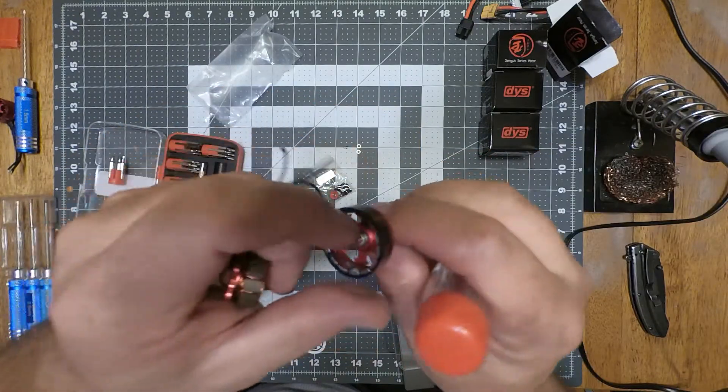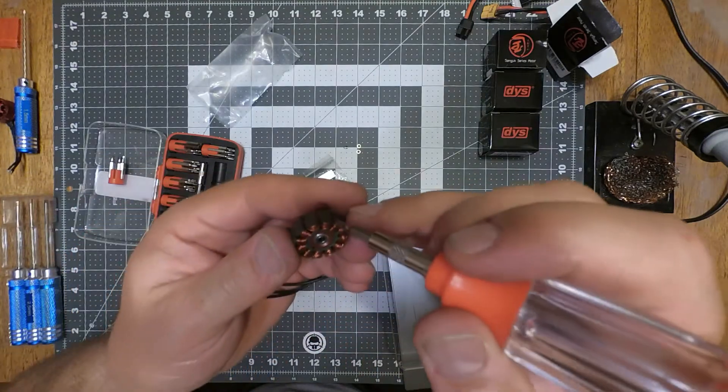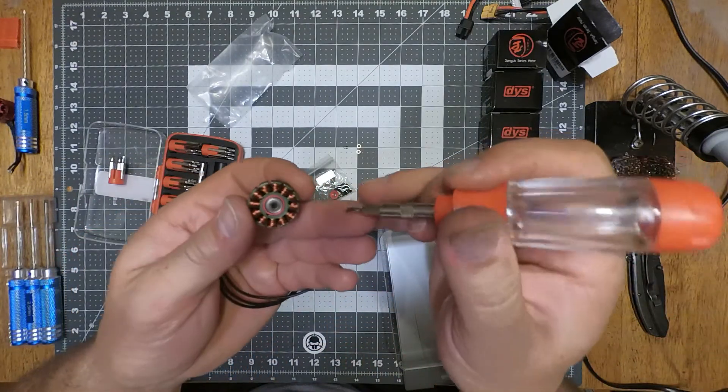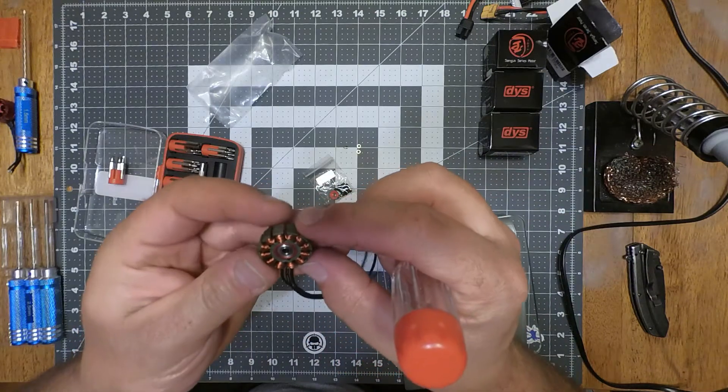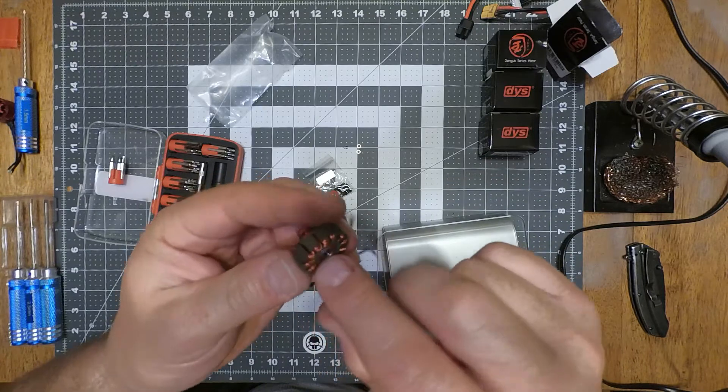There's another big booger of balancing putty. Right there. They've definitely been balanced. I threw a big booger here and a big booger down there. A little bit right here. There's some balancing putty right there.